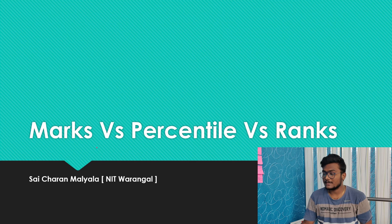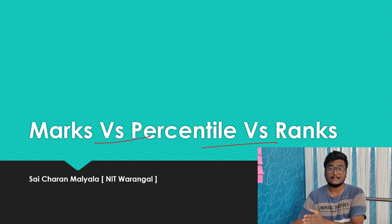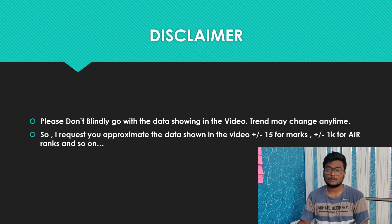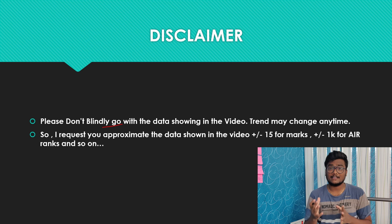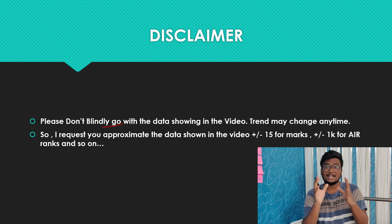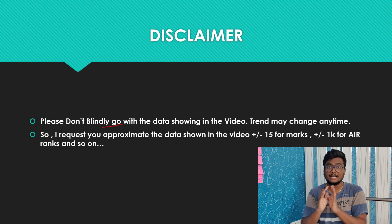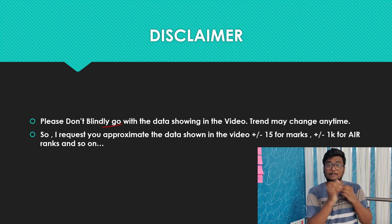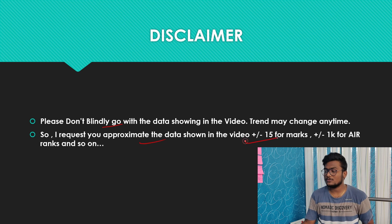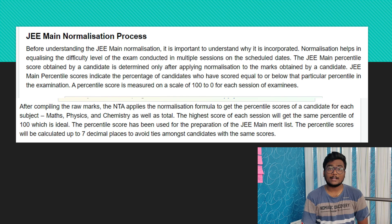The main topic of this video, as you've seen in the thumbnail and title, is marks versus percentile versus ranks — all India ranks and category ranks. I will show you EWS, OBC, SC, ST ranks — everything in this video. Before starting, a small disclaimer: please don't blindly go with the data I am showing, because trends may change every year. I am giving approximations which you can set as targets, but don't blindly fix on them. Please approximate the data shown as plus or minus 15 marks and plus or minus 1k all India ranks.